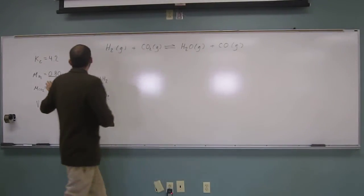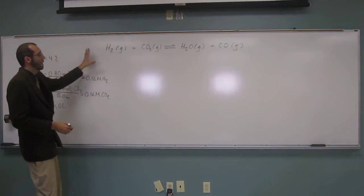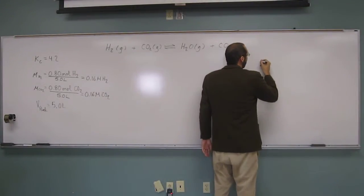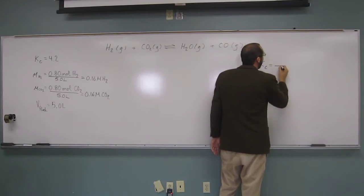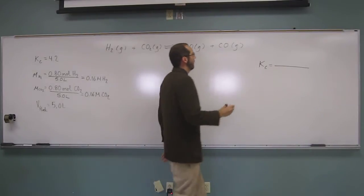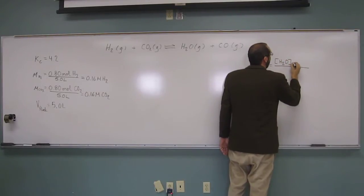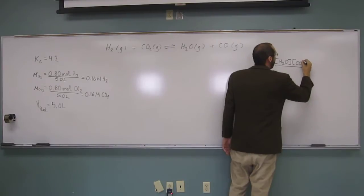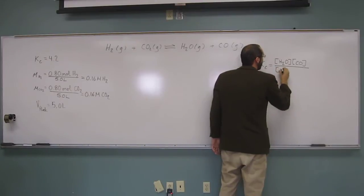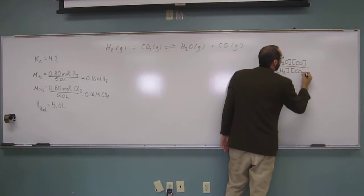So let's now, we've got the value for Kc, but we don't have the Kc expression. Okay, and remember we get that Kc expression from the balanced reaction equation, which we have up here. Let's go ahead and write out what the expression for Kc would be. Well, remember it's going to be the products raised to their coefficients, so the concentration of water times the concentration of carbon monoxide divided by the reactants raised to their coefficients. So this one is a fairly straightforward Kc.